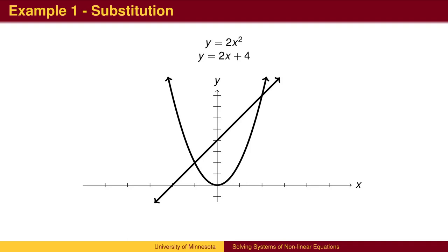it is helpful to have a graph of the two equations to get a sense of how the two graphs might intersect. In this problem, the first equation is a parabola, and the second equation is a line, which may intersect in two points. Our solution should be two ordered pairs.